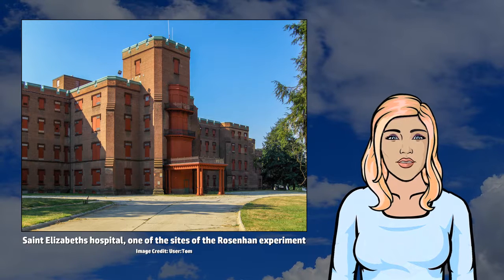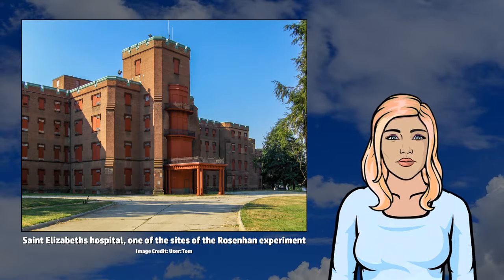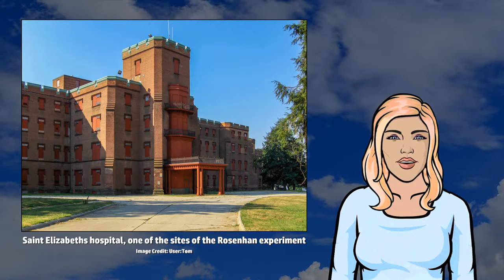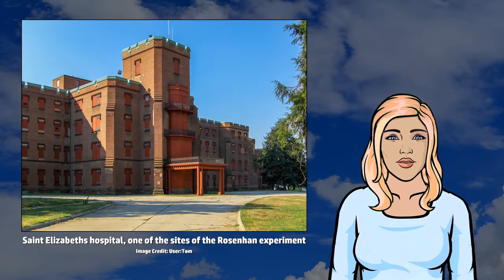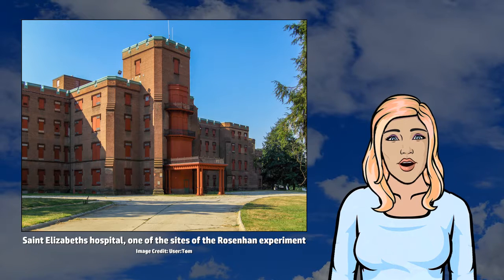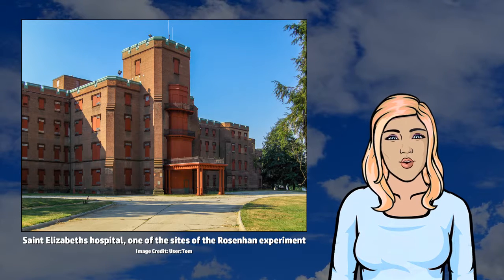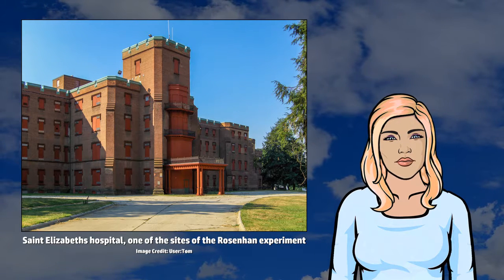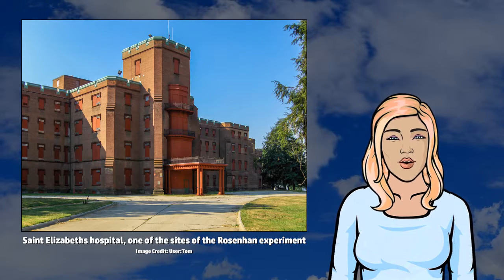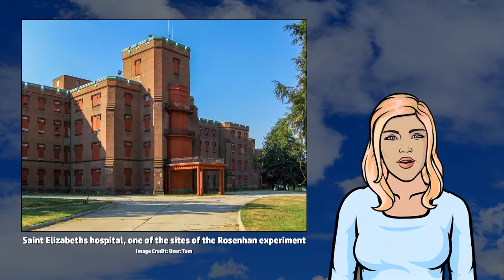The second part of his study involved an offended hospital administration challenging Rosenhan to send pseudo-patients to its facility, whom its staff would then detect. Rosenhan agreed, and in the following weeks the staff identified 41 new patients as potential pseudo-patients. In fact, Rosenhan had not sent any pseudo-patients to the hospital.